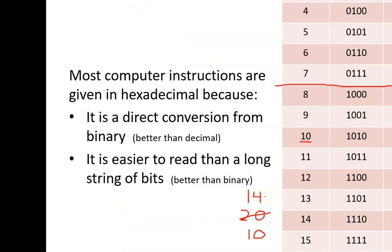Most low-level computer instructions are given in hexadecimal. You will really see this in a later assembly language course. Why hexadecimal? First, it is better than decimal because there is a simple, direct conversion between hexadecimal and binary. No need for a dividing method. Second, it is better than binary because it uses far fewer digits. It gets very difficult to read long strings of zeros and ones.